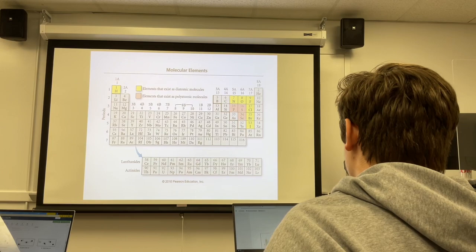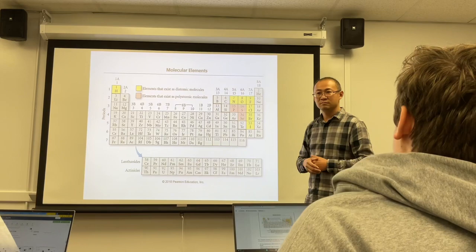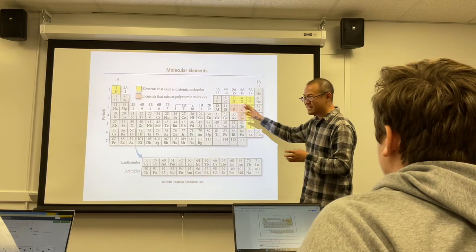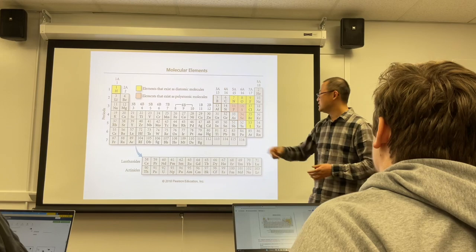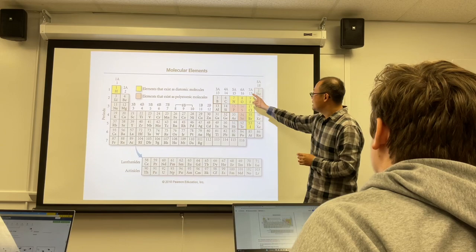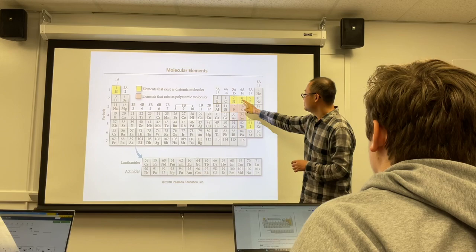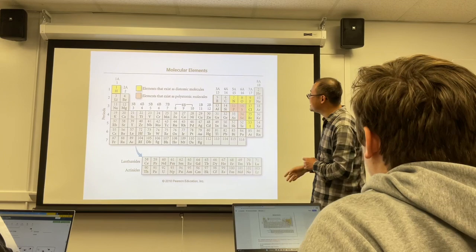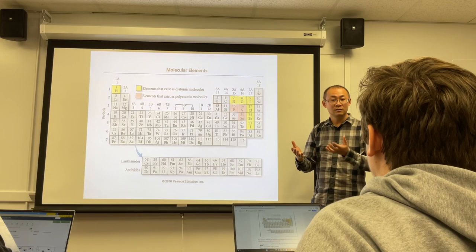Three elements — phosphorus, sulfur, and selenium — exist as polyatomic elements in nature. Sulfur normally exists as S₈; phosphorus as P₄ or P₈; selenium as Se₈. Seven elements (shown in yellow on the periodic table) exist as diatomic: hydrogen, nitrogen, oxygen, fluorine, chlorine, bromine, and iodine.